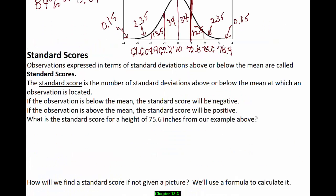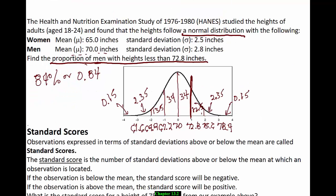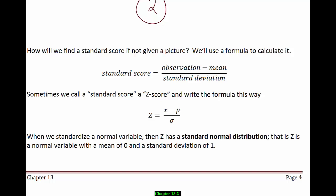What is the standard score for a height of 75.6 inches from our example? Well, 75.6 is written directly underneath the 2 on the picture, so it corresponds to two standard deviations above average, making the standard score 2. If we don't have a picture, or the value isn't exactly on 1 or 2, we need a formula. The standard score is the observation minus the mean, divided by the standard deviation. We call that a z-score: z equals (x minus mu) divided by sigma.